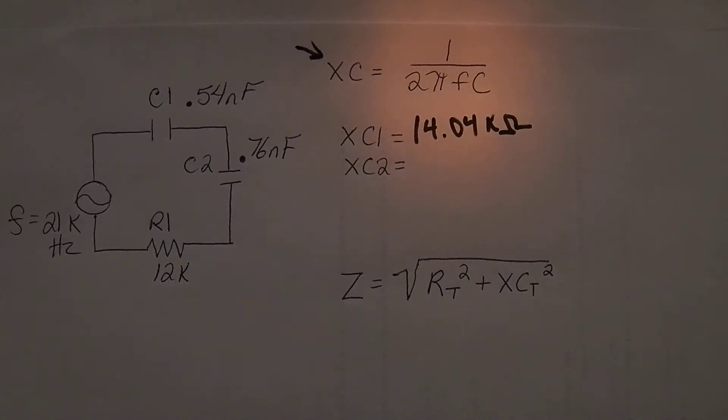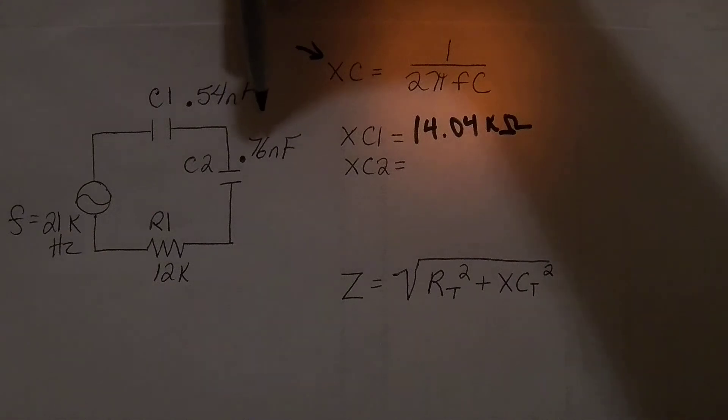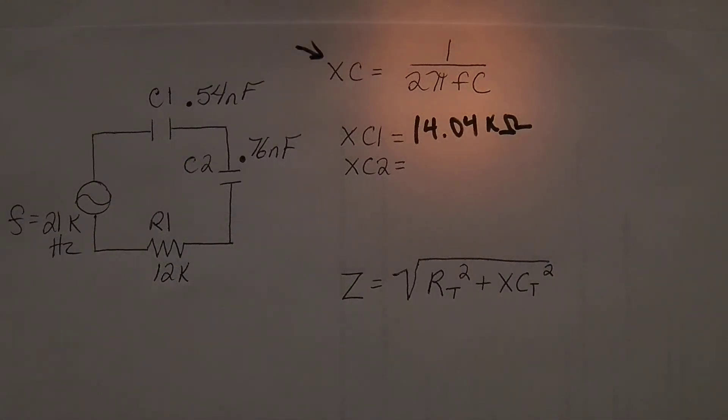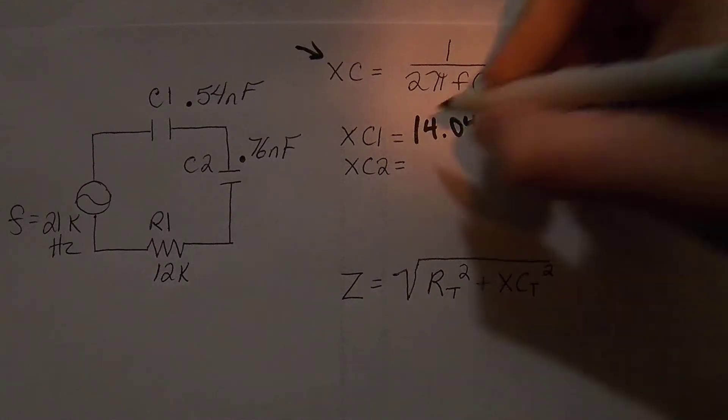And then we'll do the same process to get the capacitive reactance of XC2. So we'll take 6.28 or 2π, whichever you feel most comfortable with, times 21K times in this case we're going to use the capacitance of C2 which is 0.76 nanofarad, so 0.76 shift nano. So we have now equals, inverse, equals, and we get 9.98 kilo ohms.